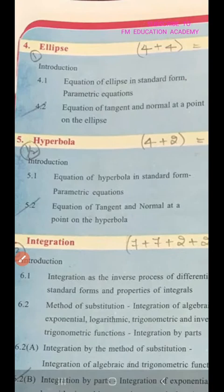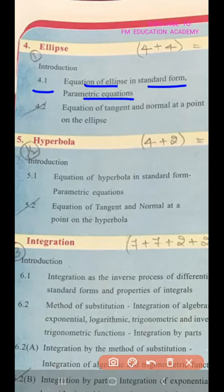Chapter 4, ellipse, you have chapter 4.1, equation of ellipse in standard form and parametric equations. In chapter 4, ellipse, you have one 4 mark question and again one 4 mark question, that is totally 2 four mark questions, that is 8 marks from this chapter. Then you have equation of tangent and normal at a point on the ellipse.